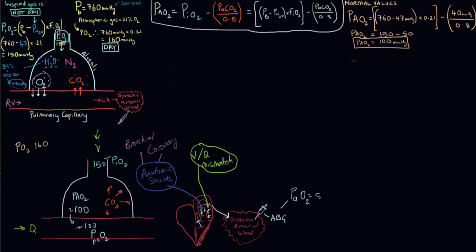A normal value for that is around 80 to 100. That's going to vary in different textbooks and based on what institution you work at. You can see that it's lower than it was in the alveolar space.